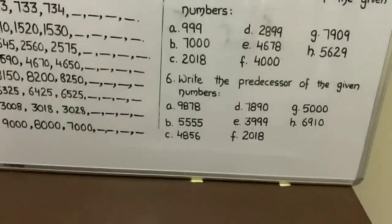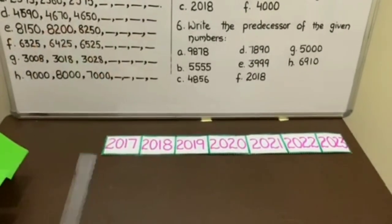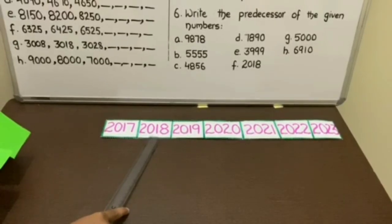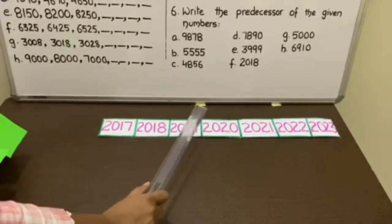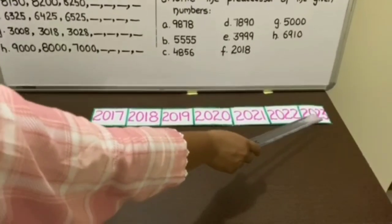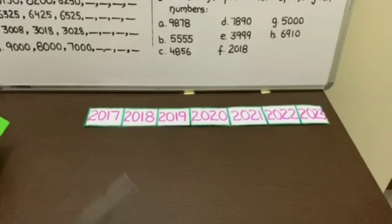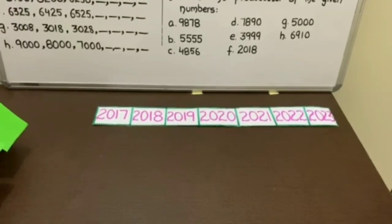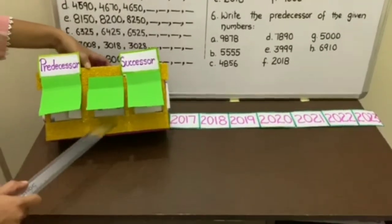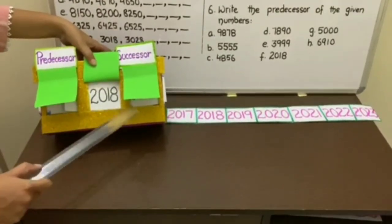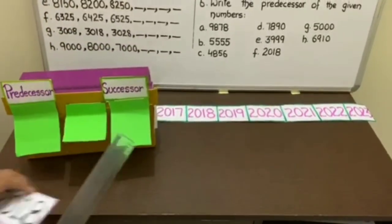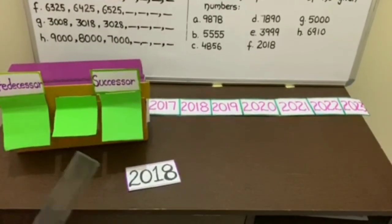Now have a look on the number line: 2017, 2018. The successor of 2018 is 2019, 2020, 2021, 2022, and 2023. Have a look on this area. So the successor of 2018 is 2019. Our answer will be 2019.